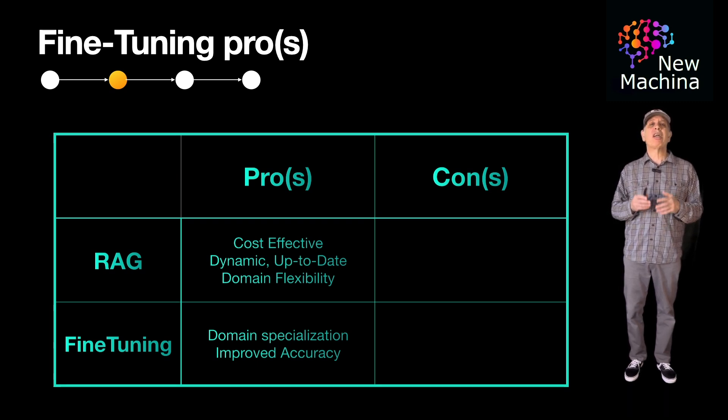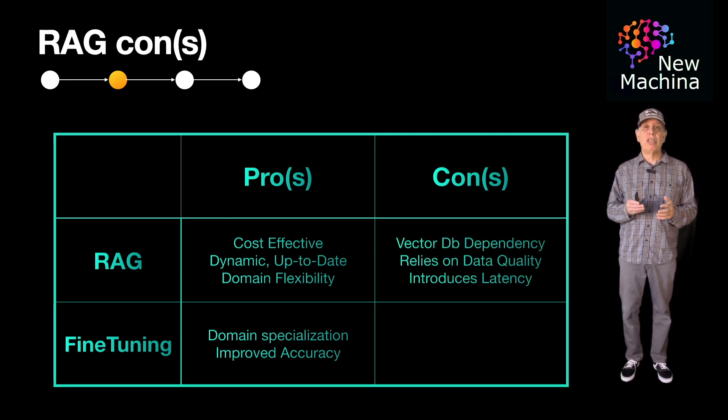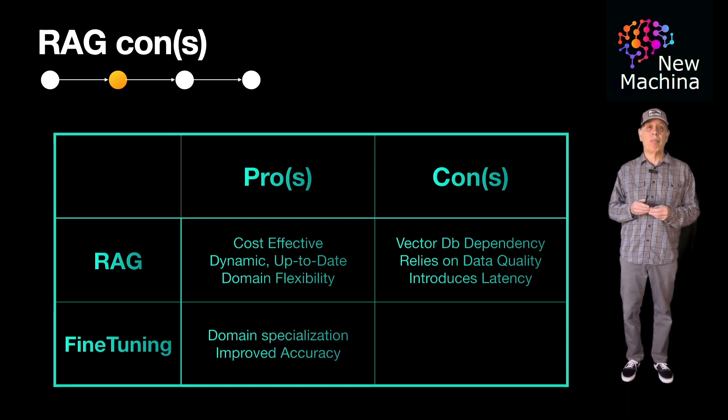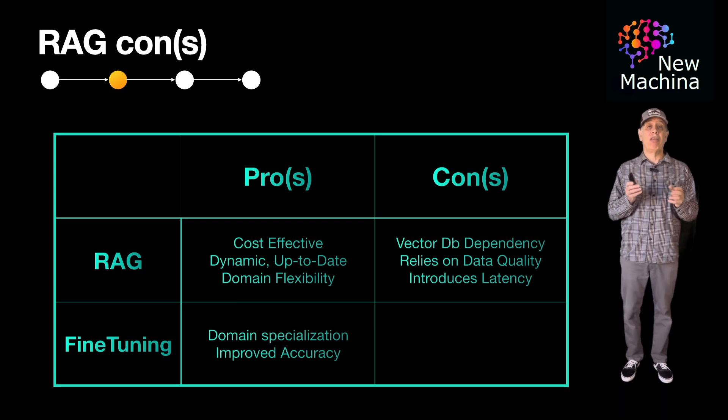Okay, so what are the cons of using RAG? Well, the first is dependency on a retrieval system, typically a vector database. RAG also relies heavily on the quality and relevance of the data stored in the vector database.